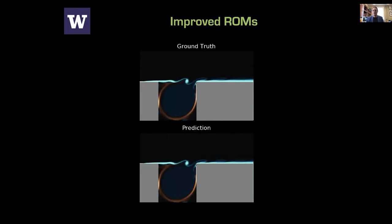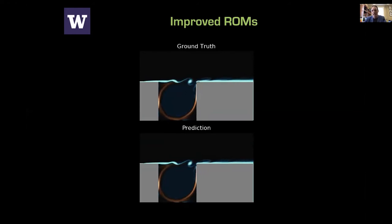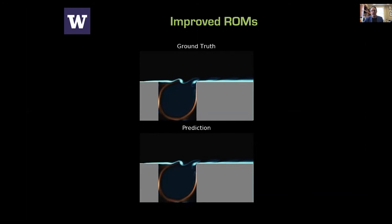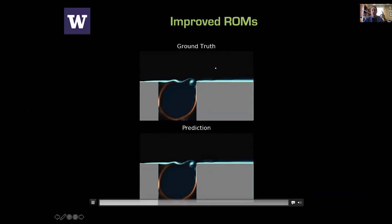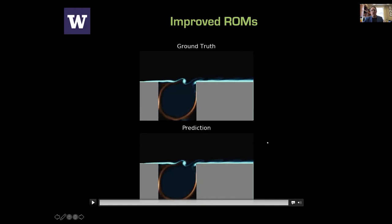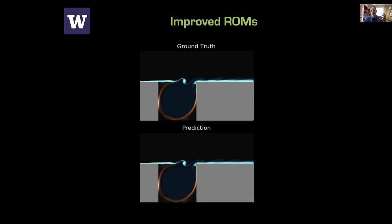We also used this for model reduction. Instead of the standard reduced-order modeling approach — SVD to low-rank subspace, then Galerkin projection — we take the low-dimensional embedding and apply Koopman forecasting, then project back up. The future state prediction is amazingly accurate; it basically destroys typical projective PDE tricks. There's a lot of space here if you start using the right coordinates and embeddings.